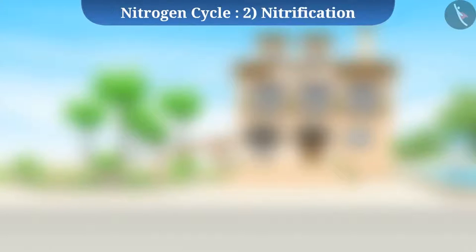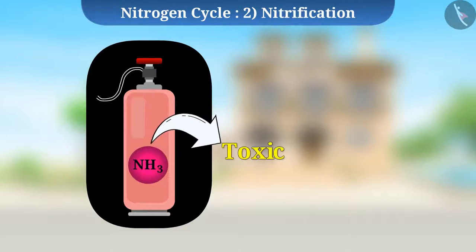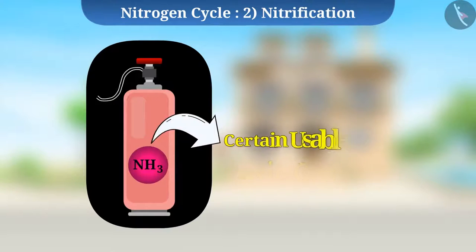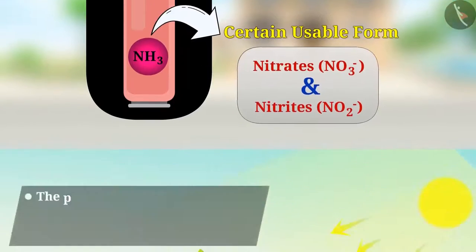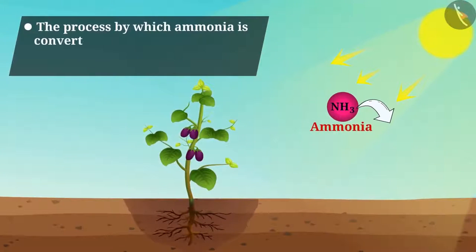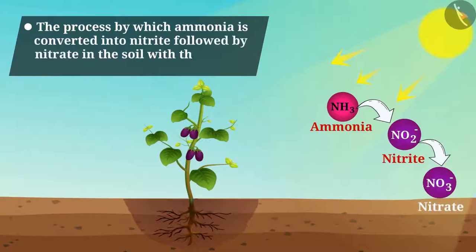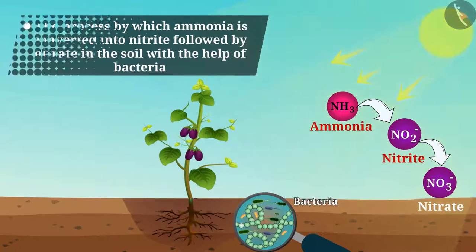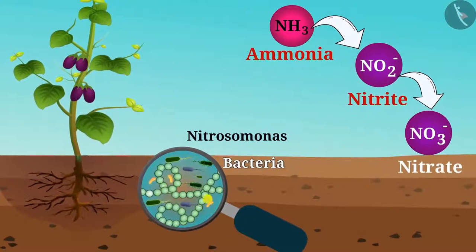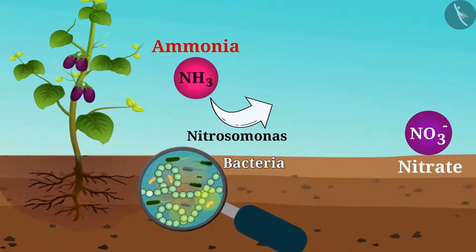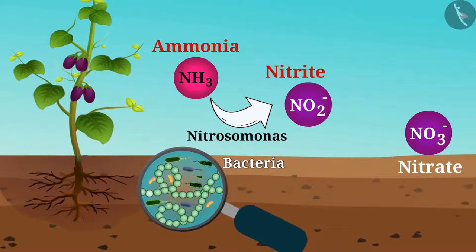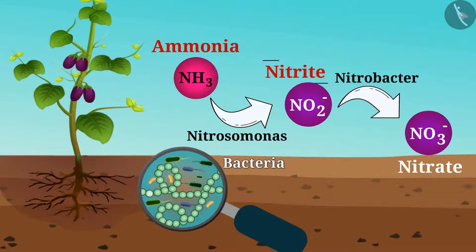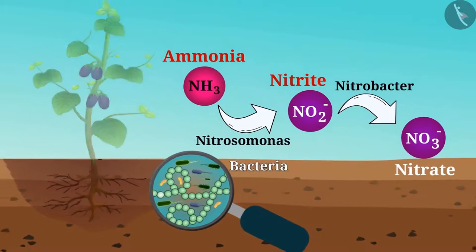The next stage is nitrification. Ammonia is a toxic gas, so it must be converted to a usable form. The process by which ammonia is converted into nitrite, followed by nitrate, in the soil with the help of bacteria is called nitrification. Bacteria such as Nitrosomonas oxidize ammonia in the soil and convert it into nitrite. Further, bacteria such as Nitrobacter oxidize nitrites into nitrates, which is a form usable by plants.